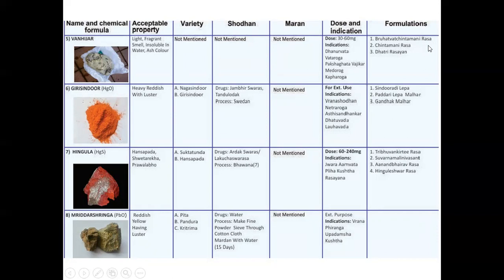Next is Vanni Jaar — its properties are light, recurrent smell, insoluble in water, and ash colored. Types, Shodhana, and Marana are not mentioned. Dose is 30 to 60 milligram. Indications: Dhanurvata — tetanus, Vata Roga — neurological problems, Paksha Ghat — hemiplegia, Vajikar — aphrodisiac, Medo Roga — obesity or overweight, and Kapha Roga. Formulations containing Vanni Jaar: Bruhat Vata Chinta Mani Ras — best Rasayana for Vata Vyadi — and Dhatri Rasayana.